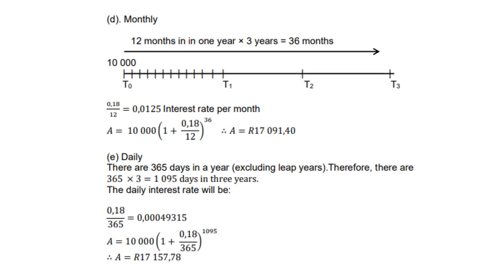For monthly compounding, there are 12 months in one year, so three years gives 36 months, and the interest rate is divided by 12, giving 0.0125. Therefore A = 10,000 × (1 + 0.18/12)^36, and the answer is R17,091.40.